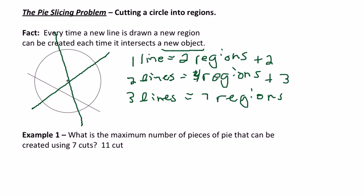So on my example, what is the maximum number of pieces of pie that can be created using seven cuts? That's just doing this problem. We already know the first three, so if the third cut gives us seven pieces, the fourth cut intersects the three lines that are already there in the circle, so we add four to get eleven.